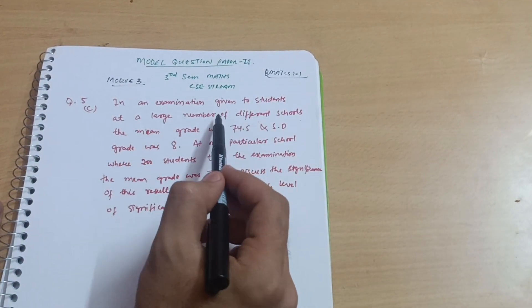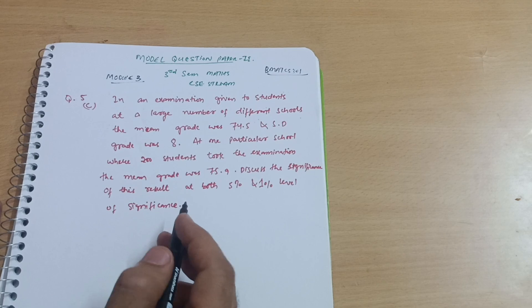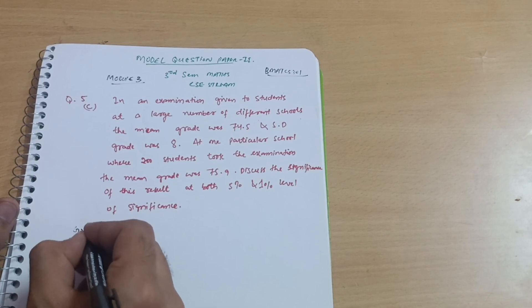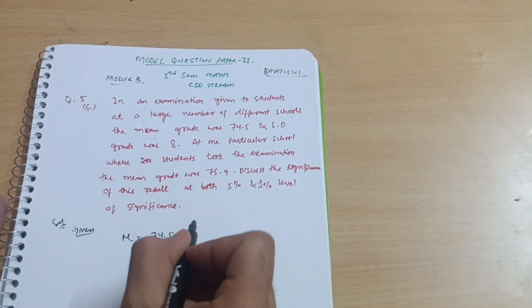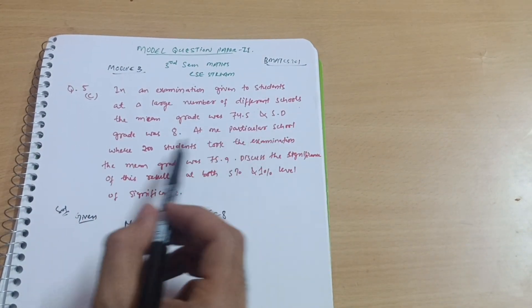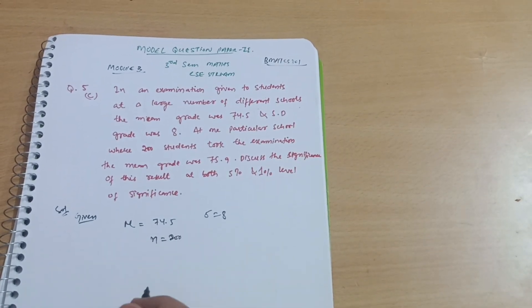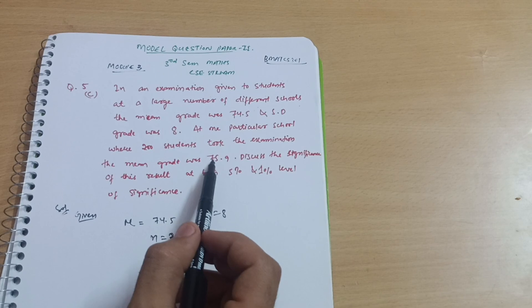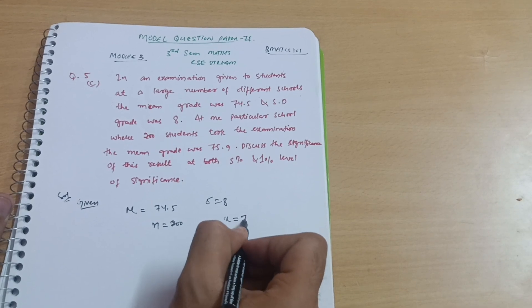This question is a little bit different from previous ones because the mean is directly given as 74.5. So in the solution, given data: mu is equal to 74.5. Standard deviation is also directly given, so sigma is equal to 8. At one particular school, 200 students took the exam, so n is equal to 200. The observed mean grade was 75.9, so x-bar is equal to 75.9.